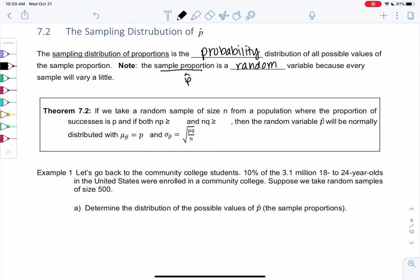So we'll collect lots of samples and make a graph. So if we take a random sample of size n from a population where the proportion of successes is p, if both np and nq are greater than or equal to 10, 10 feels a little arbitrary but that is the cutoff, then the random variable p-hat will be normally distributed with the mean and standard deviation from last section. So I'm going to highlight normally distributed, which means we can use the normal curve.